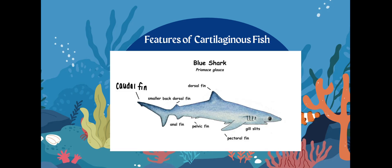Cartilaginous fish. This cartilaginous fish is actually facing the opposite direction of the bony fish, but the fins are essentially the same. It has a dorsal fin right on top, the caudal fin is the large fin on the back, and then we have the anal fin, pelvic fin, and pectoral fin.